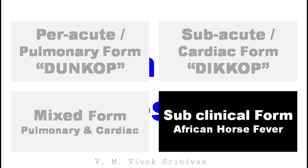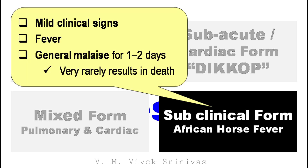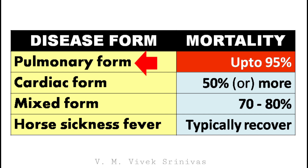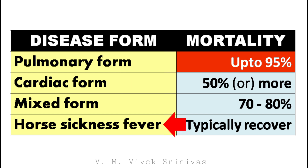The last form is the subclinical form, or African horse fever. In this, mild clinical signs with fever and general malaise for a short period are noticed. Deaths are rare in this form. Based on severity, high mortality is observed in the pulmonary form — up to 95% — followed by mixed form at 70–80%, and cardiac form at 50% or more. In the subclinical form, the animal will typically recover.